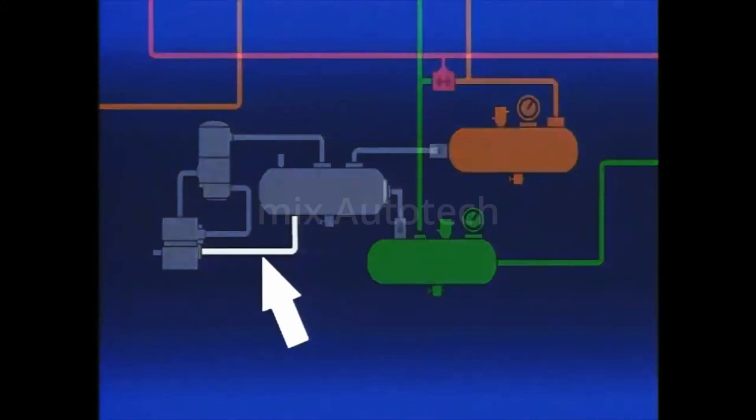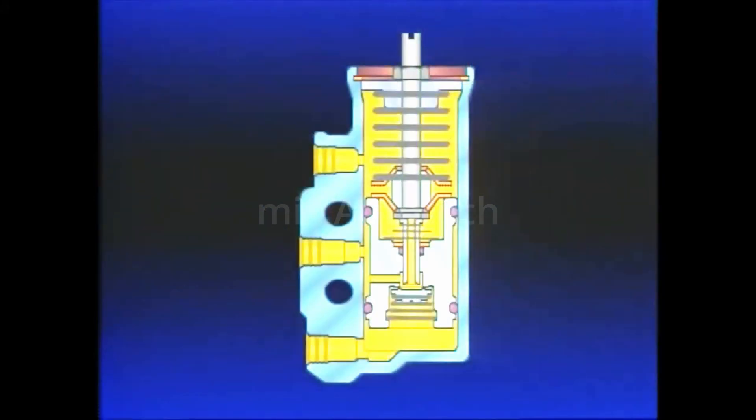An airline connects the governor to the supply reservoir. Reservoir air enters the governor at its reservoir port.